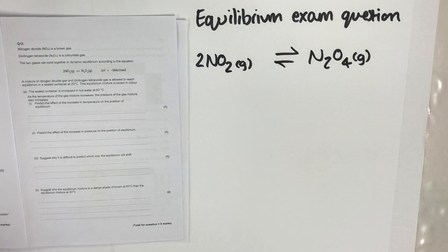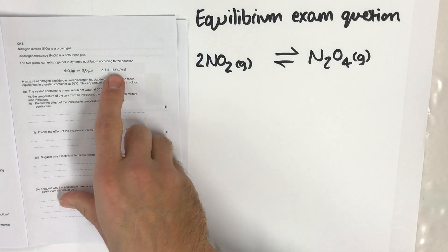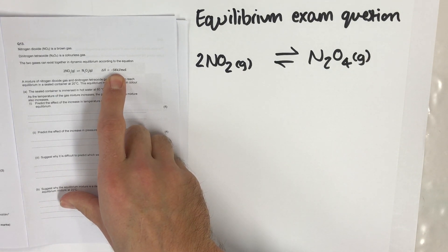What we've got here is an equilibrium established where nitrogen dioxide, a brown gas on the left-hand side, forms an equilibrium in a sealed container to make dinitrogen tetraoxide, which is a colourless gas on the right-hand side. The first key piece of information in the question is that the forward reaction has an enthalpy change of minus 58 kilojoules per mole.